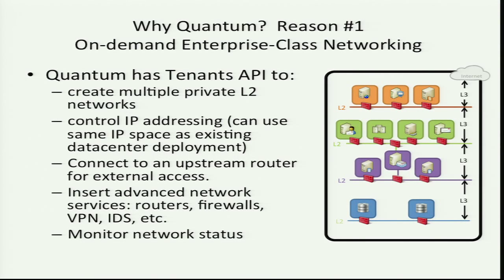With that API, just like you can tell Nova to create a server, you can tell Quantum to create a network — and not just create a network, but specify a subnet of IP addresses, because you want to take an application from your data center and move it to the cloud with the same network topology. You can build rich multi-tier applications with firewalls and all kinds of different policies.